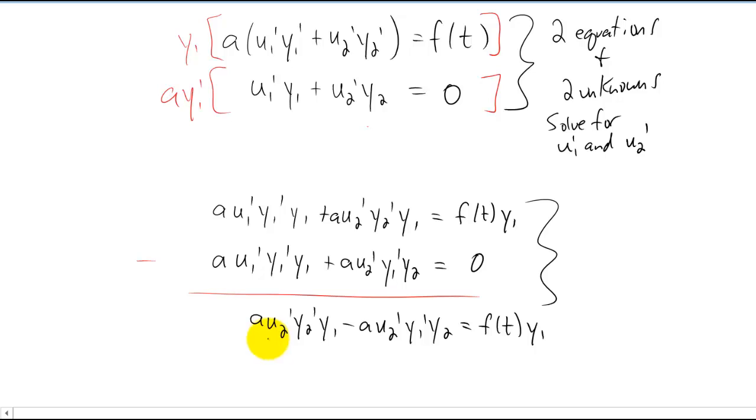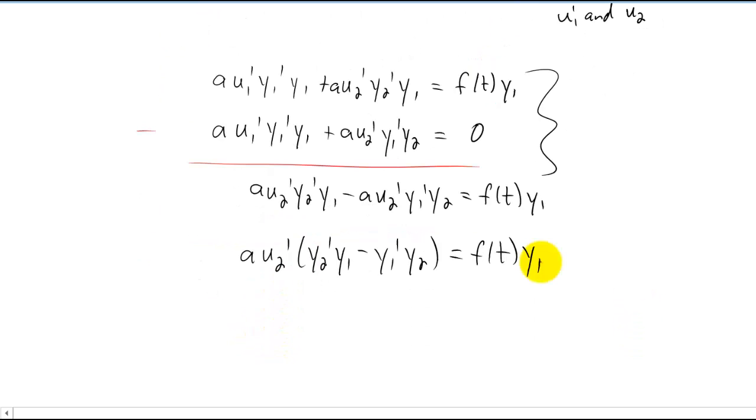Now it looks like I have some like terms here. I can factor out an a, u2 prime. Now ultimately the goal was to find u2 and u1, so now we can get u2 prime, at least by itself, by dividing.